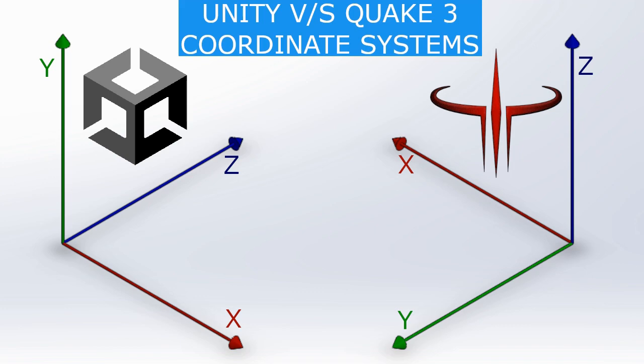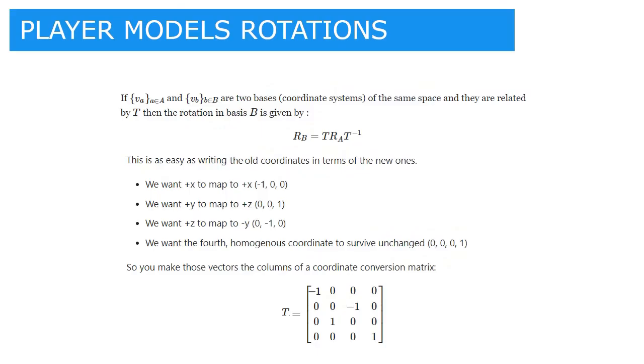So if we use that matrix and expand it, we get a rotation matrix that we can use in Unity. And as you can see below, if we use this equation, basically we get our matrix T, we can apply it and its inverse, and then we can get our rotation matrix in our new coordinate system, in this case, the Unity system.